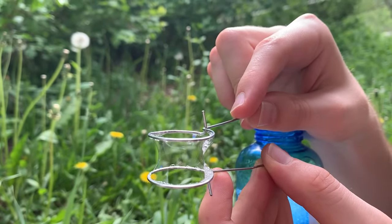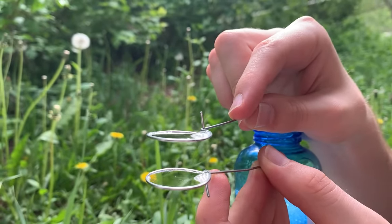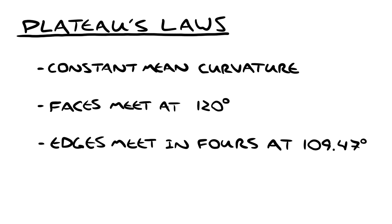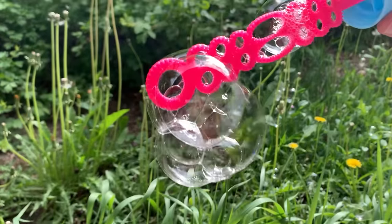Another rule is one that I told you earlier when I introduced the double bubble. The edges of three soap films meet at 120 degree angles. If multiple edges meet together at a point, they always meet in fours, like a tetrahedron, or about 109 degrees.